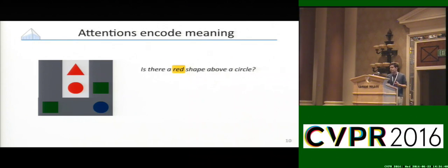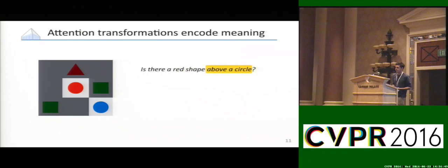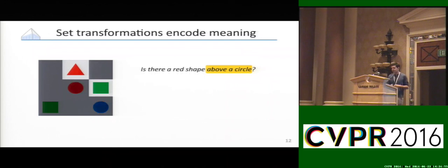In this way, we can think of red as being some function from our image onto an attention to the red parts of it. We can do more complicated things as well. If I have a word like above, I can think of that as something that's going to transform an attention to circles to the things that are above circles in the world.